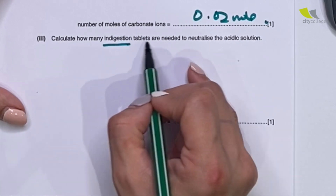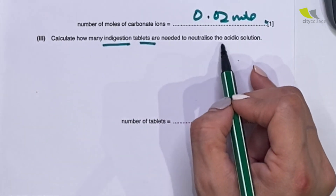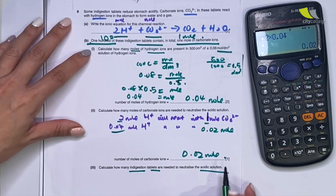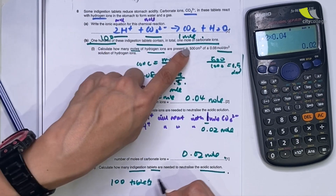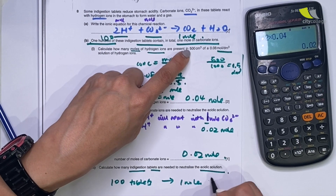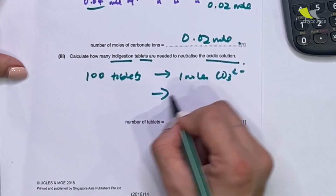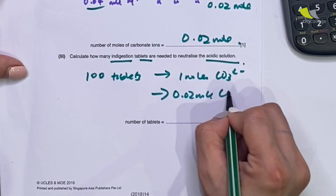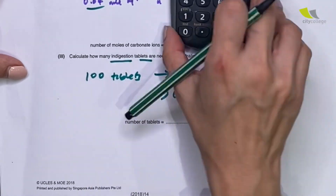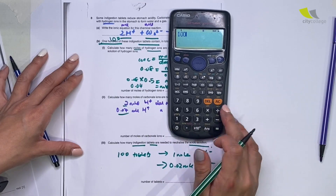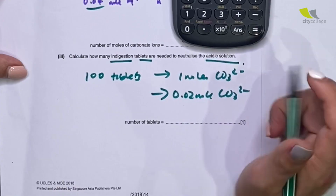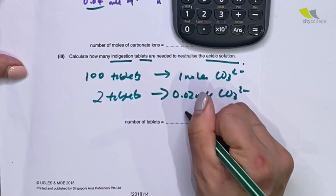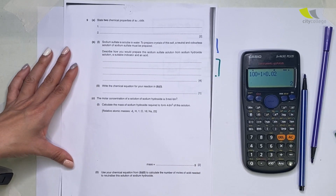They then ask: calculate how many indigestion tablets are needed to neutralize the acidic solution. 100 tablets contains 1 mole of carbonate. The question gave me 0.02 mole carbonate. Using ratio and proportion — divide and multiply — the answer is 2 tablets.